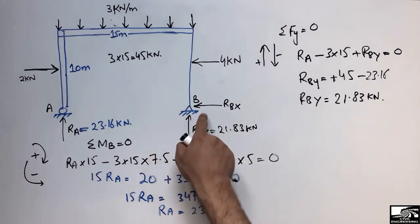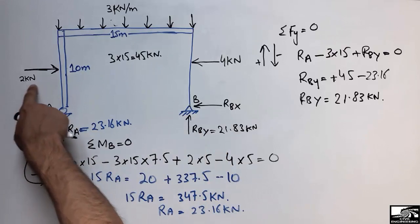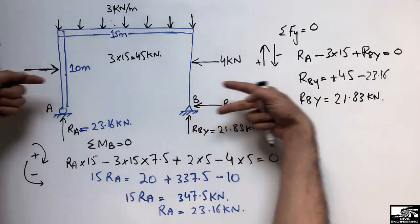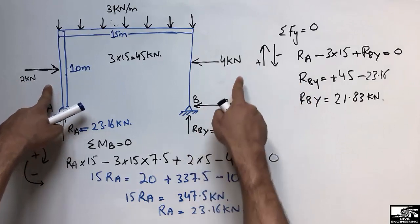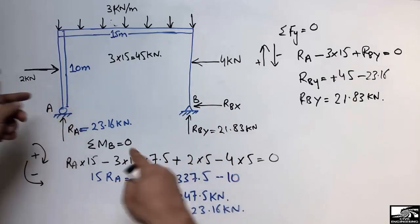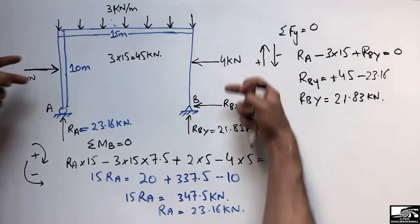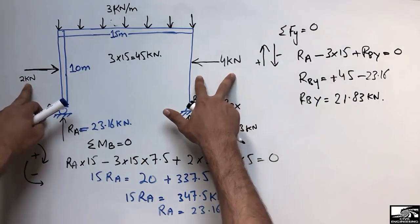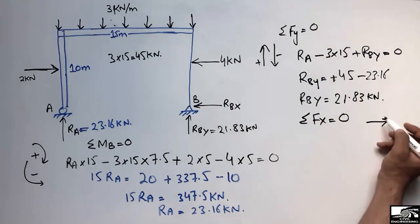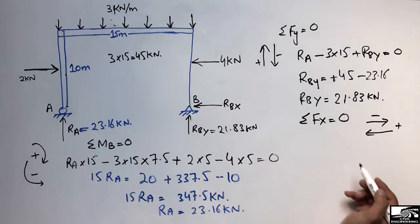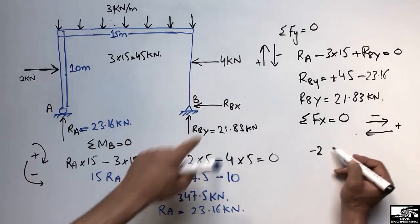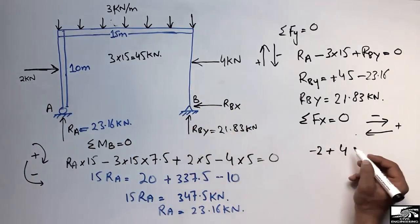Now to find the horizontal reaction R_BX provided by the hinge: the 2 kN force acts in one direction and the 4 kN force acts in the opposite direction. For equilibrium, taking the summation of horizontal forces equal to zero — with 2 kN negative and 4 kN positive — and assuming R_BX acts in the positive direction: −2 + 4 + R_BX = 0, giving R_BX = −2 kN.